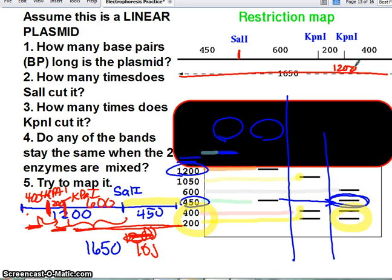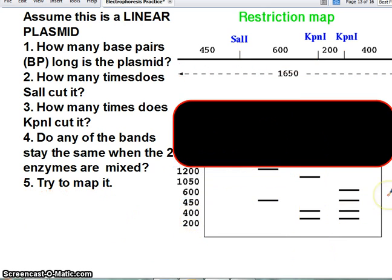On the flip side, if we then turn around and cut it with just the other one, we would get a 400, a 200, and a 1,050 from here to here. And then when we cut it with both, we get the 450, the 600, the 200, and the 400. If you do it incorrectly, you'll see that the numbers won't add up. You'll end up cutting it, and then when you go back and look at the electrophoresis, the bands will not match the cuts that you placed.